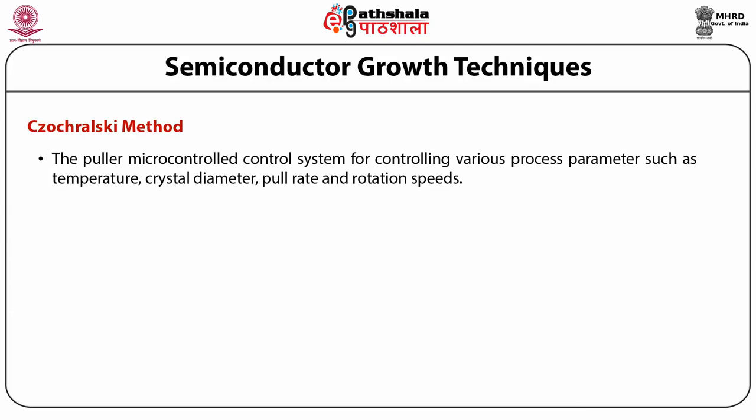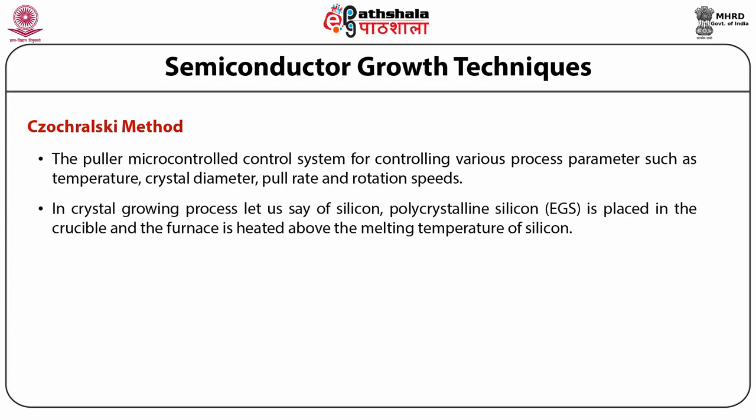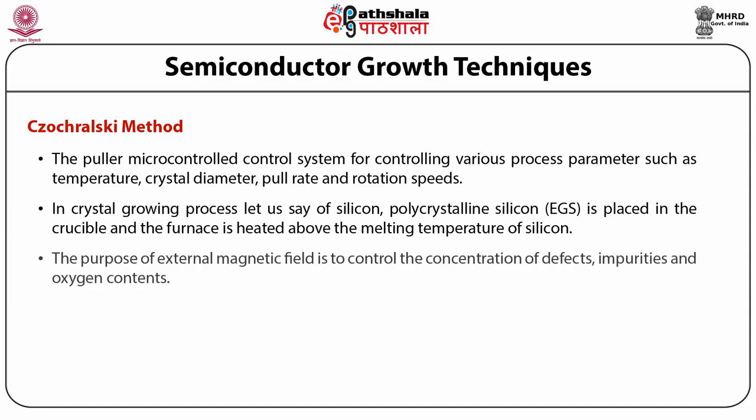The puller's microcontrolled system controls various process parameters such as temperature, crystal diameter, pull rate, and rotation speeds. In crystal growing of silicon, polycrystalline silicon is placed in the crucible and the furnace is heated above the melting temperature of silicon. For large-diameter silicon ingots, an external magnetic field is applied to the Czochralski puller to control the concentration of defects, impurities, and oxygen contents.